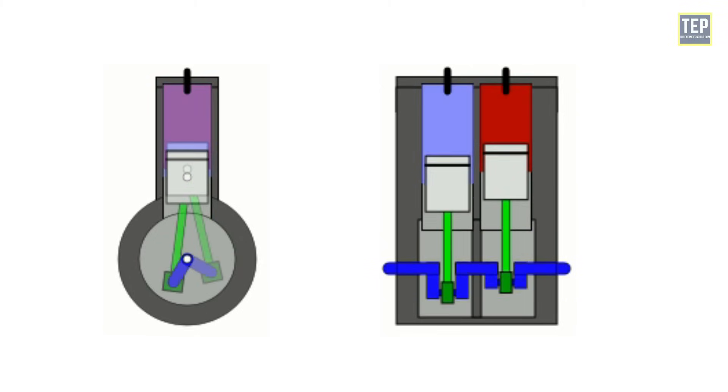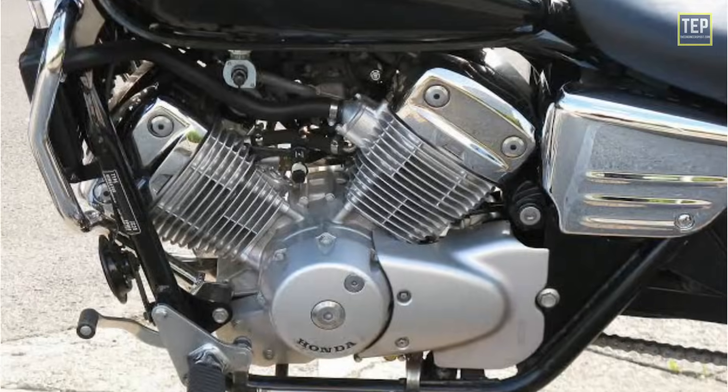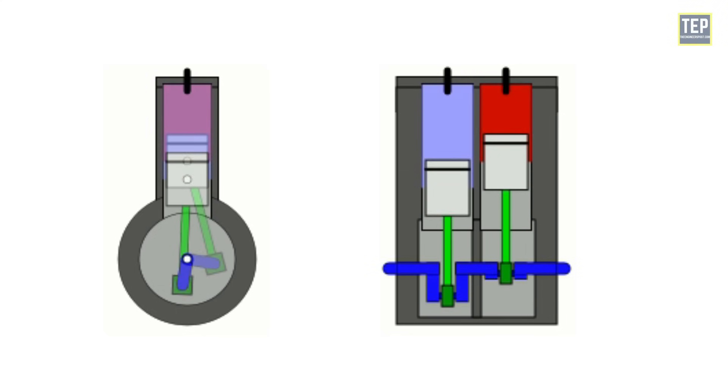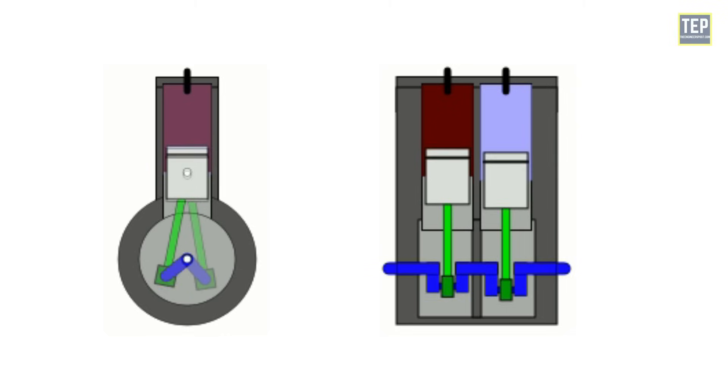The pistons in a 270-degree straight twin engine are never stationary simultaneously, as per a 90-degree V-twin engine, thereby reducing the net momentum exchange between the crank and pistons during a full rotation.